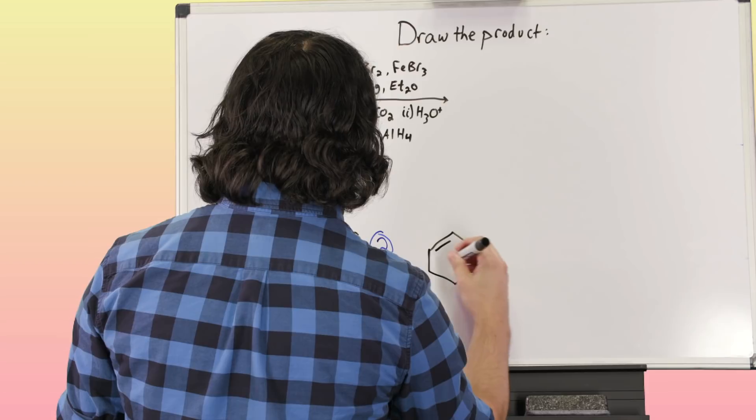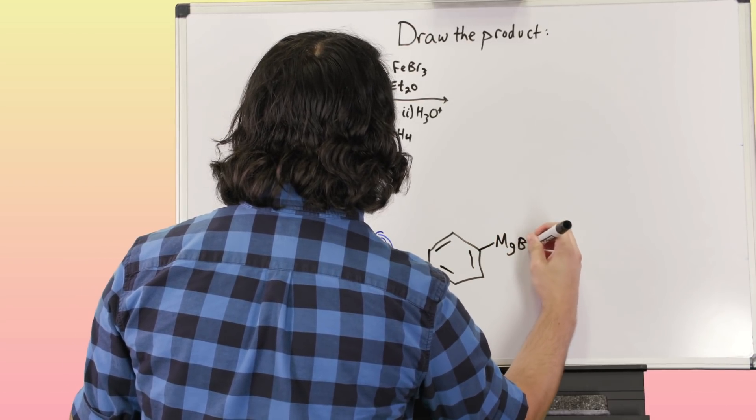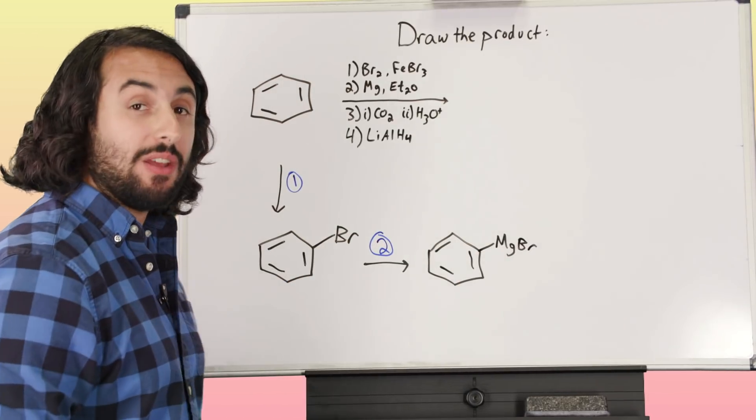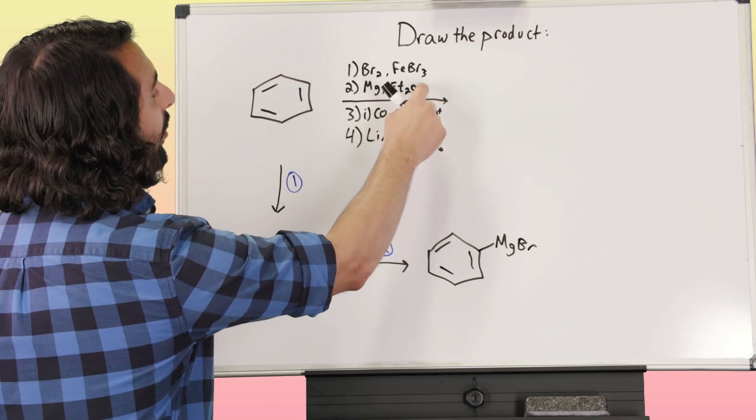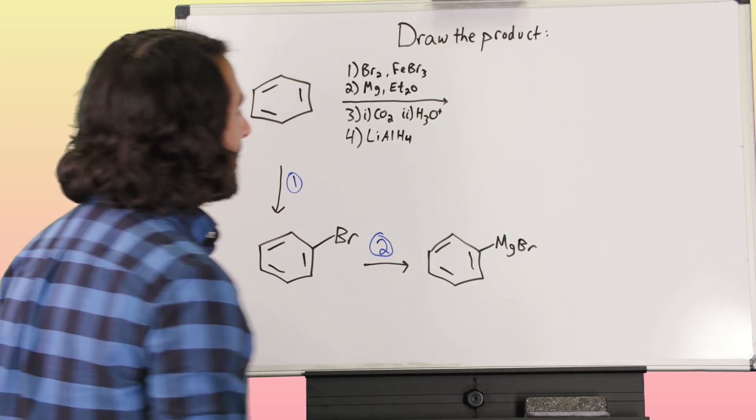We know that magnesium is going to insert itself into that carbon-bromine bond. We're going to get from Br, we're going to get MgBr. So magnesium, remember in diethyl ether, that's going to give us our Grignard reagent.